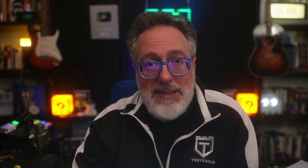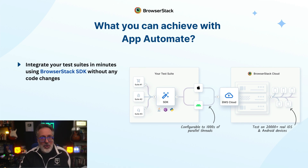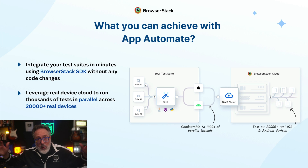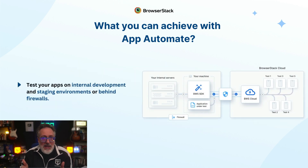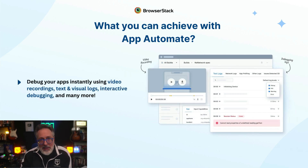App Automate supports testing across native and hybrid apps using frameworks like Appium, Flutter, XCUITest, Espresso, and Detox. With App Automate you'll be able to integrate your test suite in minutes using the BrowserStack SDK without any code changes, leveraging real device clouds to run thousands of tests in parallel across over 20,000 real devices. You can also test your apps on internal development and staging environments or even behind firewalls.